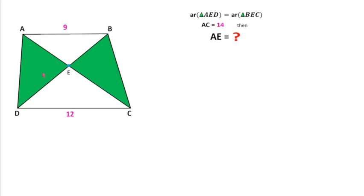In this question, the areas of these two green triangles are equal. The length of AB is 9 units, CD is 12 units, and AC is 14 units. We have to find the length of AE.